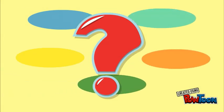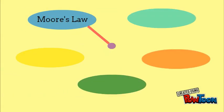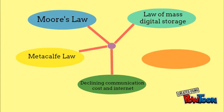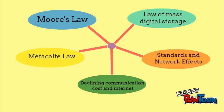There are five components that will influence infrastructure evolution: Moore's law and microprocessing power, the law of mass digital storage, Metcalfe's law and network economics, declining communication costs and the internet, and standards and network effects.